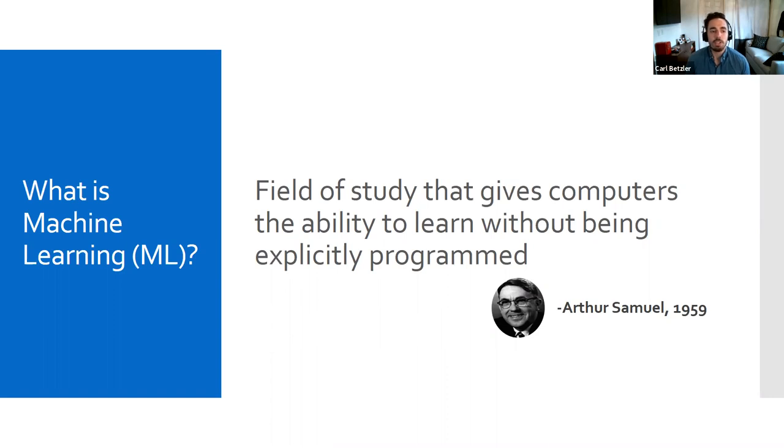Before we talk about how to use machine learning, it's important for us to understand what machine learning is. And it just so happens that one of the earliest definitions of machine learning is actually one of the clearest. Arthur Samuel, who was a pioneer of AI and worked at IBM in 1959, said that machine learning is a field of study that gives computers the ability to learn without being explicitly programmed.